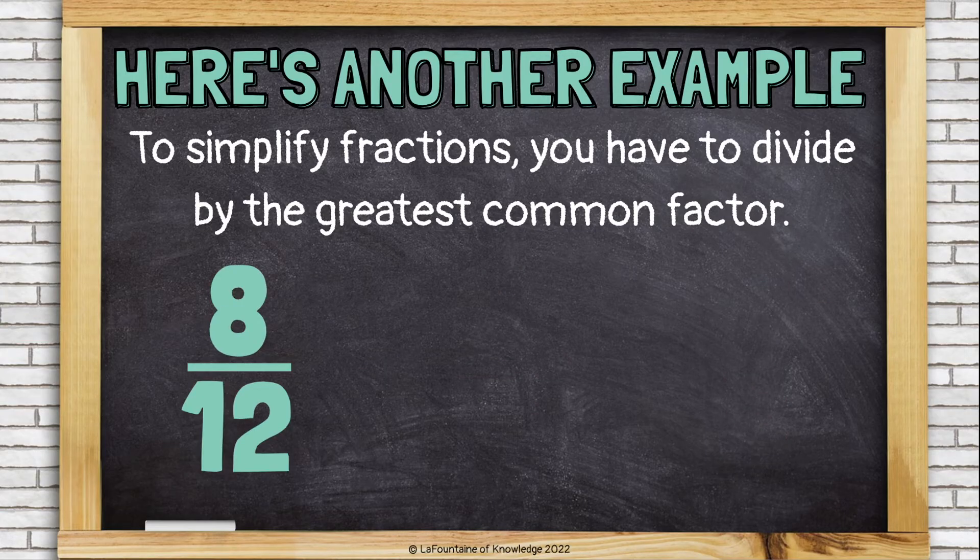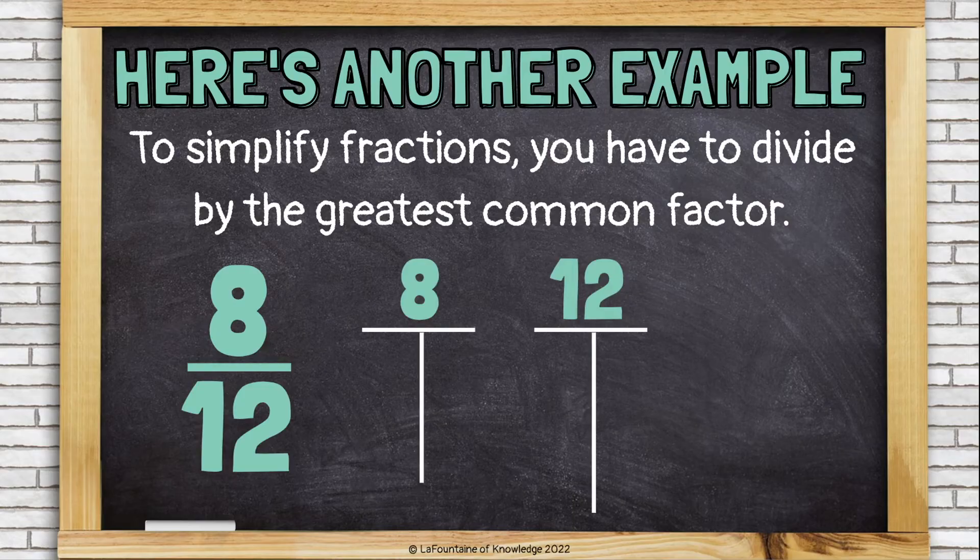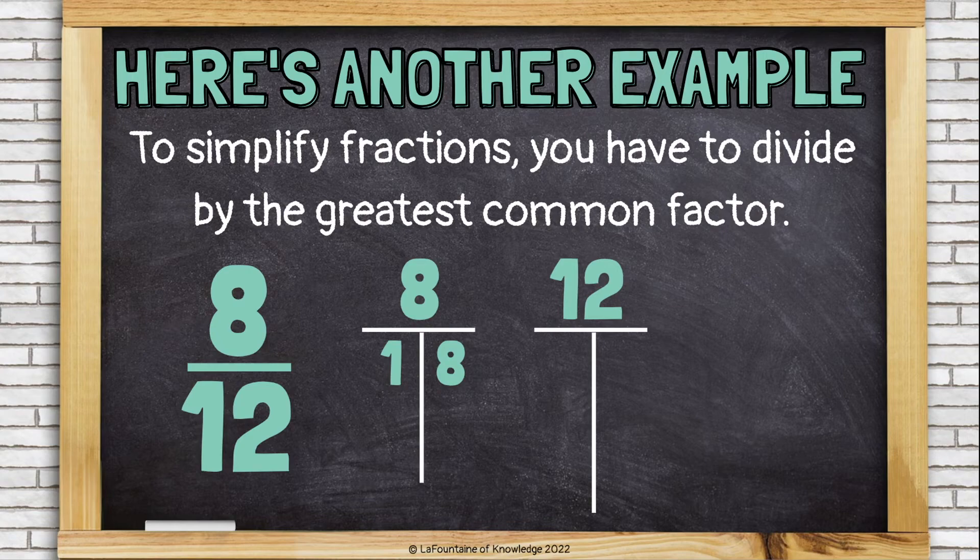Let's do another. Eight-twelfths this time. We'll set up factor T charts for both numbers, eight and twelve. Let's look at the factors of eight. One times eight. And two times four. That's it.